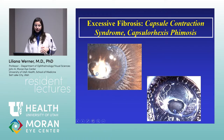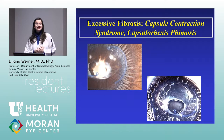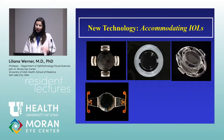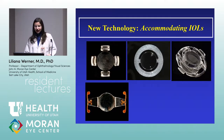In the past, anterior capsule fibrosis was only considered a problem when excessive or asymmetric — such as phimosis of the capsulorhexis opening with very flexible loop IOLs leading to extensive decentration. However, nowadays we cannot think like that because in our lab we work on many accommodating IOL projects.